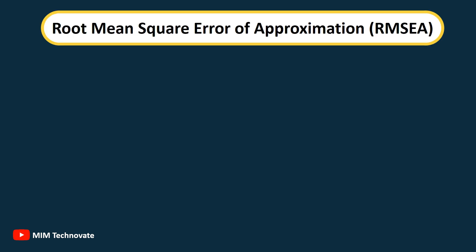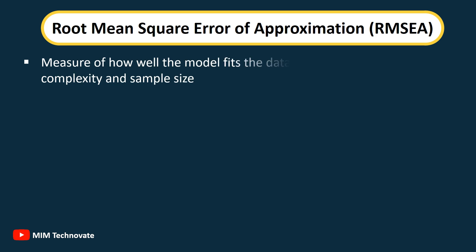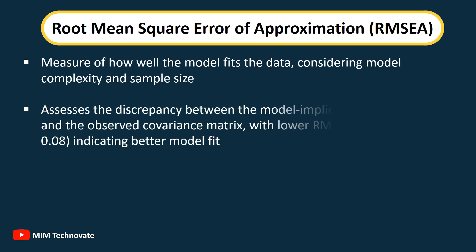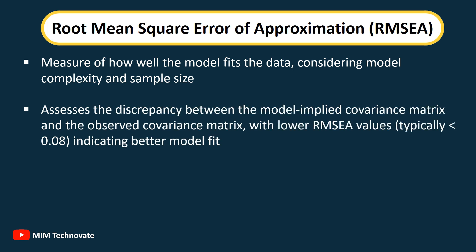Root Mean Square Error of Approximation (RMSEA): A measure of how well the model fits the data, considering model complexity and sample size. It assesses the discrepancy between the model-implied covariance matrix and the observed covariance matrix, with lower RMSEA values (typically lower than 0.08) indicating better model fit.